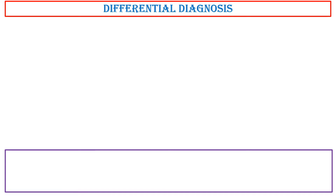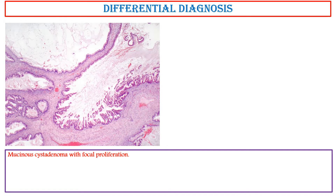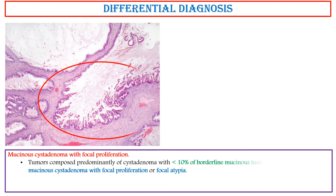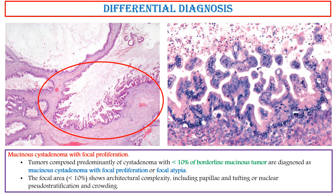Differential Diagnosis — Mucinous Cystic Adenoma with Focal Proliferation: Tumors composed predominantly of cystic adenoma with less than 10% of borderline mucinous tumor areas are diagnosed as mucinous cystic adenoma with focal proliferation or focal atypia. The focal area, less than 10%, shows architectural complexity including papillary and tufting or nuclear pseudostratification and crowding.